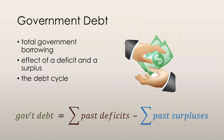Government debt is the total amount of government borrowing, and this includes past loans. We can calculate government debt by adding up all the previous years' deficits and from that number taking away all the previous years' surpluses. Intuitively, if a government runs a deficit in one year, then it is increasing its debt because it has spent more than it has collected. If a government runs a surplus in one year, then it is decreasing its debt because it has collected more money than it has spent in that year.